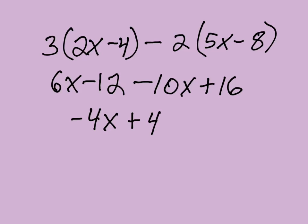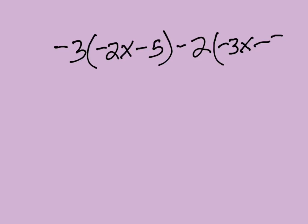Let's try another one that's got just negatives all over the place. How about negative 3 times negative 2x minus 5 minus 2 times negative 3x minus 7. Lots and lots of negatives.